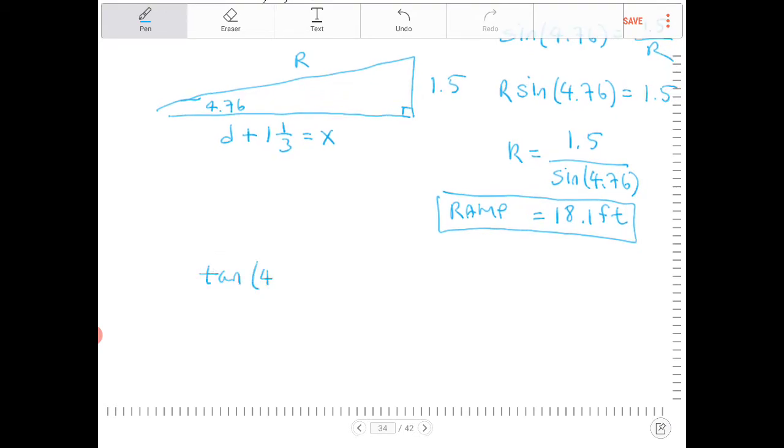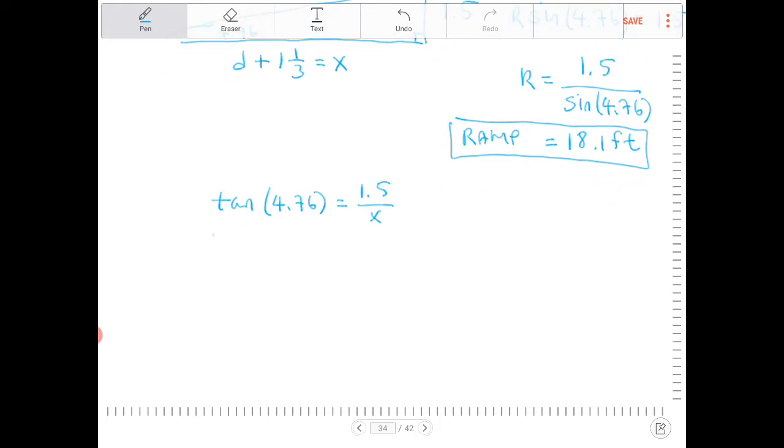So tangent of 4.76 is equal to 1.5 over x. Opposite over adjacent. I'm going to multiply both sides by x. I get x tangent of 4.76 is equal to 1.5. Divide both sides by tangent 4.76. I get x is equal to 1.5 over tangent of 4.76.